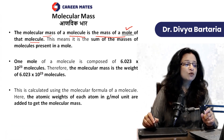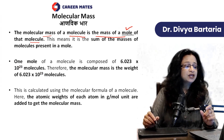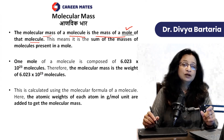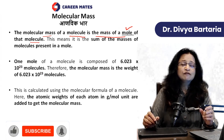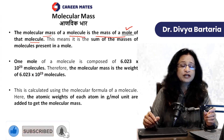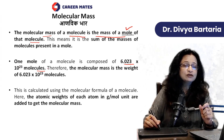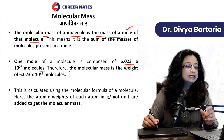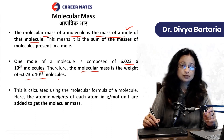The molecular mass of a molecule is the mass of a mole of that molecule. What does this mean? If one mole of a molecule is composed of 6.022×10²³ molecules, then there are so many molecules in one mole. This means that the molecular mass is the weight of 6.022×10²³ molecules.